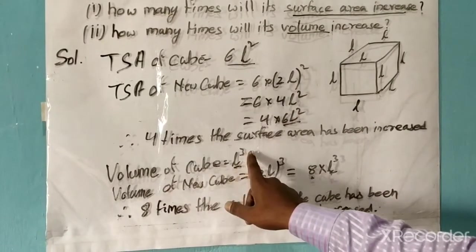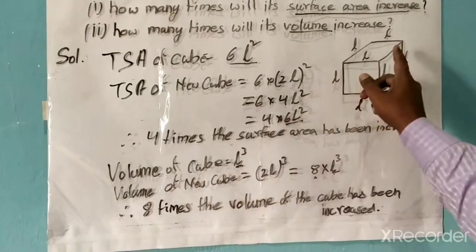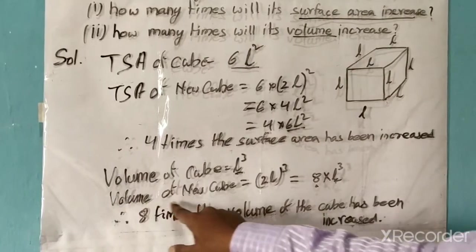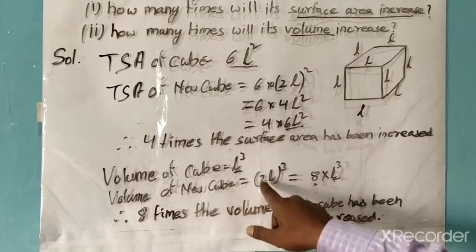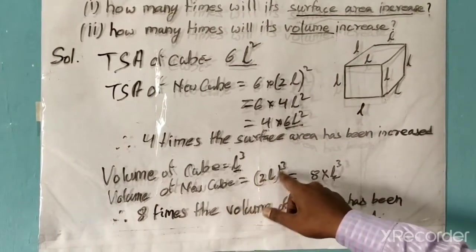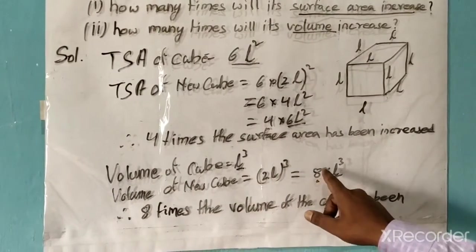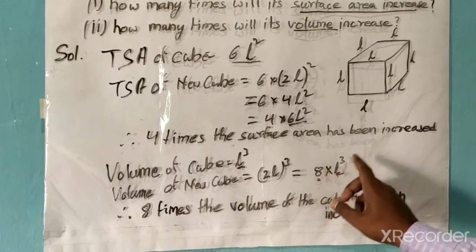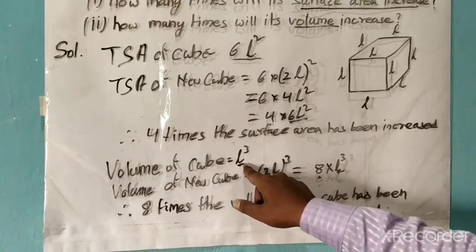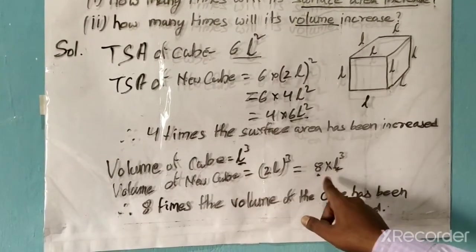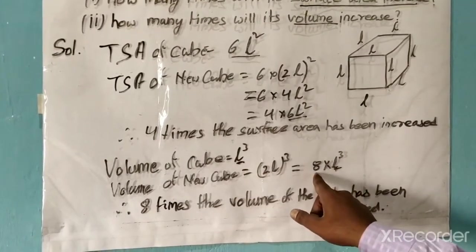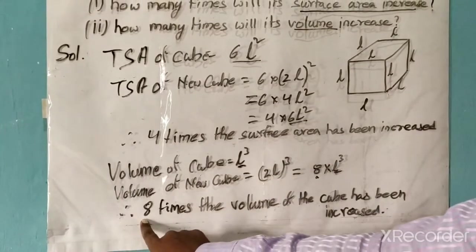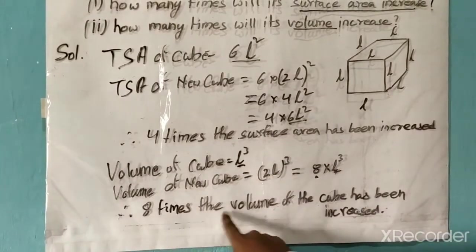Next is volume. The volume of the cube is L cubed. If the edges have been doubled, the new volume for the new cube will be (2L) the whole cube, which equals 8 times L cubed. Taking L cubed as common, 8 is taken outside, so 8 times the volume of the cube has been increased.